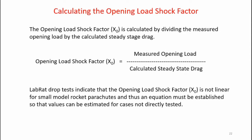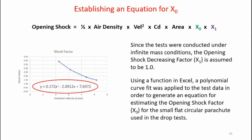That data can be used to calculate the opening load shock factor. x-sub-zero, the opening load shock factor, is equal to the measured opening load divided by the calculated steady state drag at parachute deployment. The lab rat drop tests indicate that the opening load shock factor x-sub-zero is not linear for small model rocket parachutes, so an equation must be established to estimate values for cases not directly tested. I used an Excel spreadsheet and selected a polynomial curve fit to determine an equation that closely fits the curve. That equation allows me to calculate shock factors for extraction velocities that were not tested.